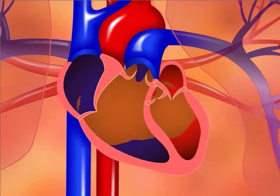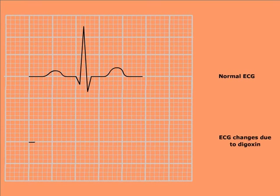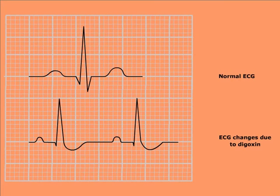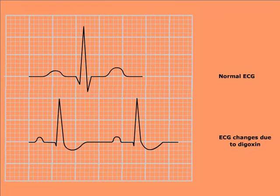The effects of digoxin can be seen on the EKG. On the top, a normal EKG is shown. The EKG of a patient taking digoxin may show nonspecific ST-segment depressions with a scooped appearance, as shown in the lower EKG. Note, however, that specific EKG findings of digoxin can be seen with therapeutic levels and are not necessarily signs of toxicity.